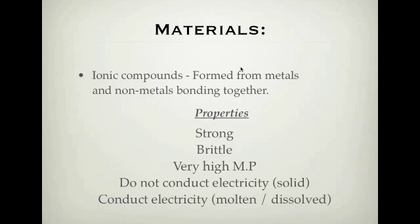Ionic compounds are formed when metals and non-metals bond together. Salt is an ionic compound because you have a metal — sodium — and a non-metal — chlorine. Salt is a very strong molecule; if you rub it in your hands it acts like sandpaper. However, salt is brittle, meaning it doesn't bend. Things can be strong and brittle at the same time: strong because it's hard, and brittle because it snaps.